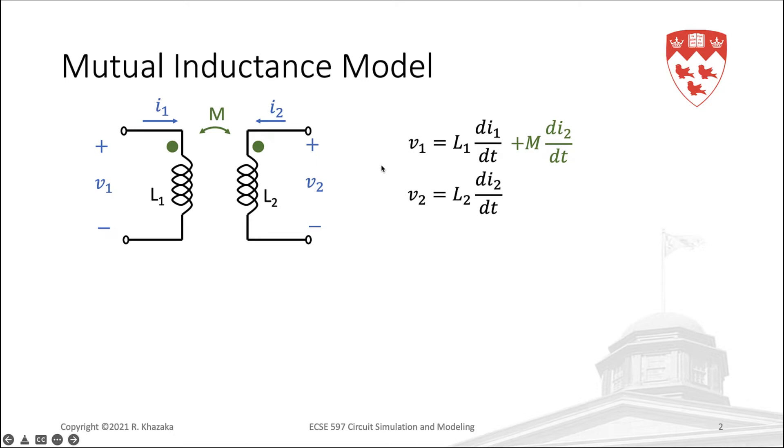And the same happens at L2, so we need to add M dI1 by dt to V2. M, of course, being the mutual inductance. The value of M is given by K square root of L1, L2, where K is the coupling coefficient.